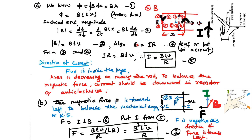For part one, we first find the induced EMF, then the current using E = IR. The loop has area l × x, where x is the distance, so the total flux is Φ = B·l·x. The induced EMF magnitude is |E| = dΦ/dt = Bl(dx/dt) = Blv. Since E = IR, we get I = Blv / R. This is the magnitude of the current in the resistor.